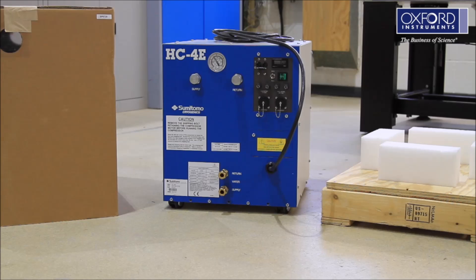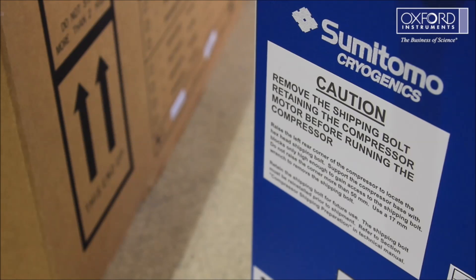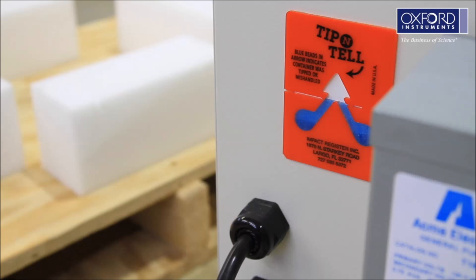Remove the compressor from its packaging. Check the static pressure to ensure it has not lost any helium gas. Remove the shipping bolt as described in the manual. Check the tip and tail indicators fitted to the compressor. If any of these have been activated, please let us know.